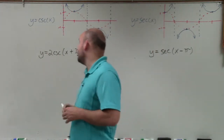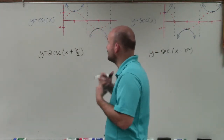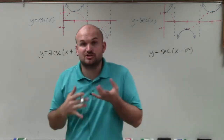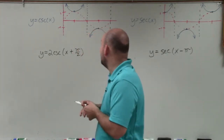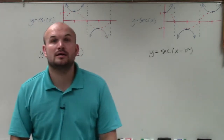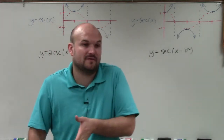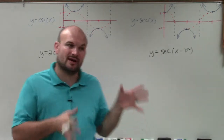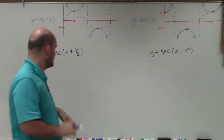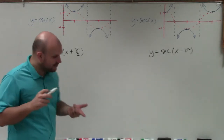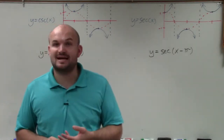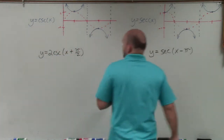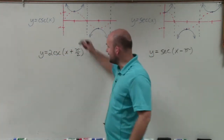In this example, when we're graphing the cosecant graph, we have some addition and subtraction inside the function, which is going to be affecting our phase shift. So we're going to be shifting our graph left and right. We still need to identify what the period is and what the x scale is. I can see that b is 1.